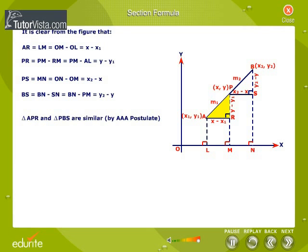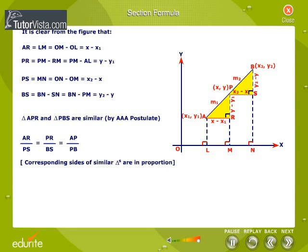Triangle APR and triangle PBS are similar. Therefore, AR by PS is equal to PR by BS is equal to AP by PB, since the corresponding sides of similar triangles are in proportion.